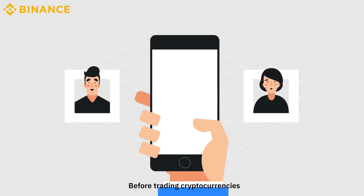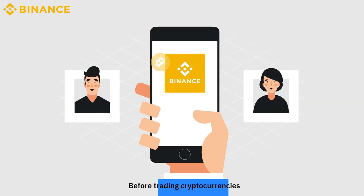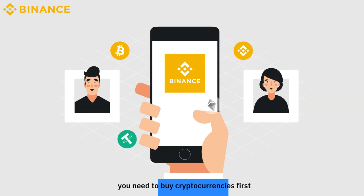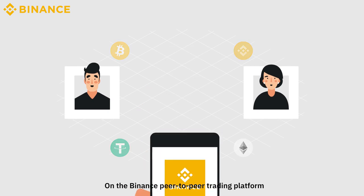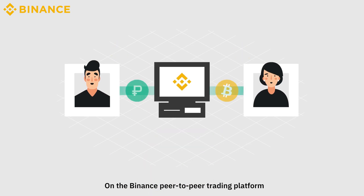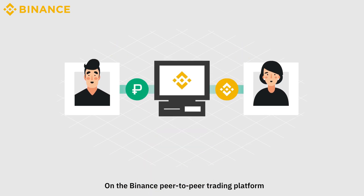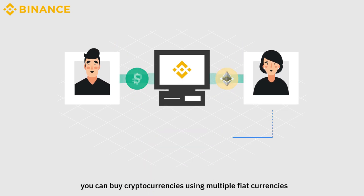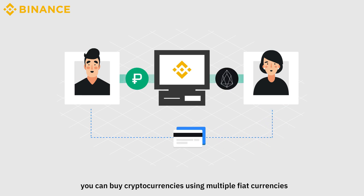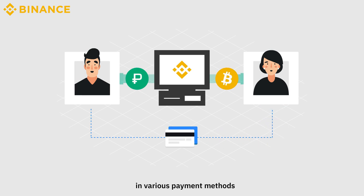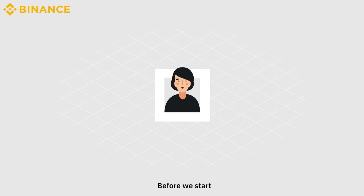Before trading cryptocurrencies, you need to buy cryptocurrencies first. On the Binance peer-to-peer trading platform, you can buy cryptocurrencies using multiple fiat currencies in various payment methods. It's super simple.